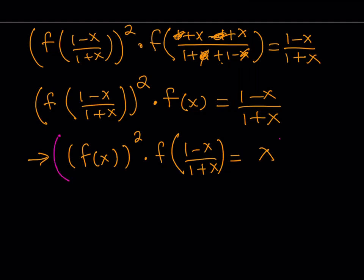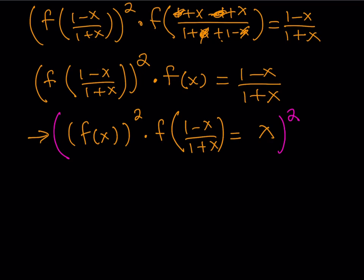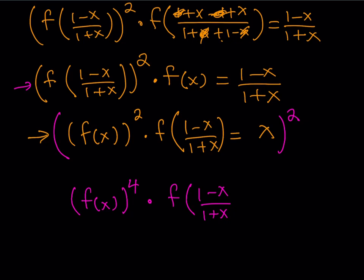I'm going to square both sides of this second equation. That gives f of x — well, you already have f of x squared, so be careful: it becomes f of x to the fourth power, multiplied by f of (1 minus x) over (1 plus x). Why are we squaring? Because my goal is to get rid of this term: notice it's f of (1 minus x) over (1 plus x) squared. If I square the second equation, I get the same thing and can cancel it. This squared times this squared equals this squared, and that equals x squared.